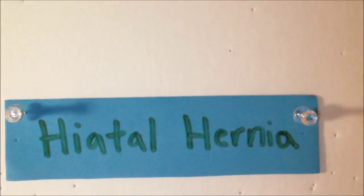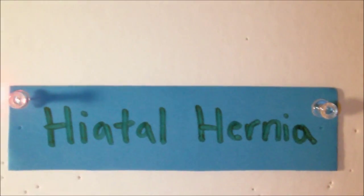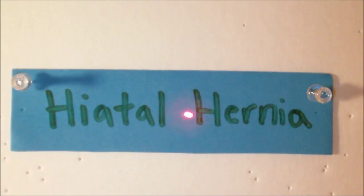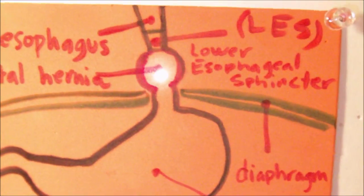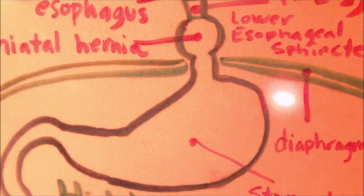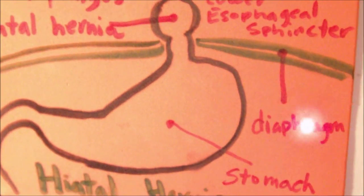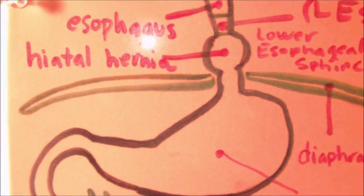Let's talk a bit about hiatal hernia. With hiatal hernia, basically a part of the stomach protrudes into the diaphragm, or the opening of the diaphragm, which is what they call the hiatus — therefore it's called hiatal hernia.